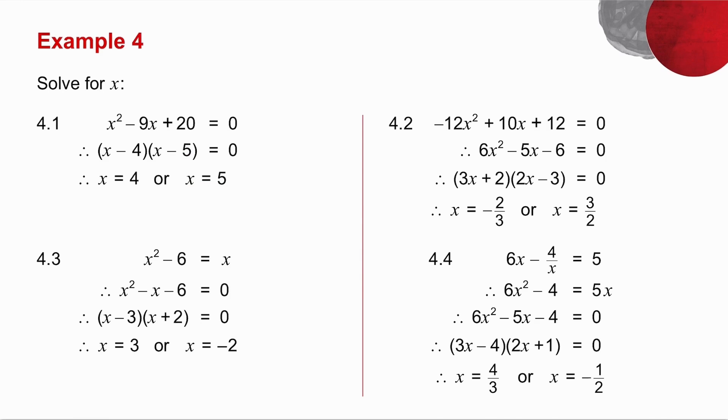Question number 4.2. Again, I've got a trinomial. You will notice that there's a common factor. So I divide everything by minus 2. Minus 12x squared divided by minus 2, plus 10x divided by minus 2, plus 12 divided by minus 2, 0 divided by minus 2. So everything is divided by minus 2. Factorize the trinomial, and you get your two solutions.